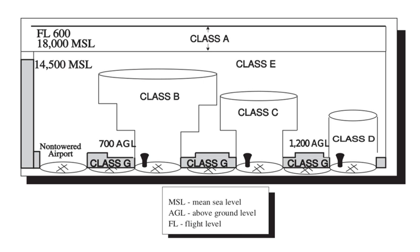Terminal Radar Service Area, or TRSA, is general controlled airspace wherein ATC provides radar vectoring, VFR vectoring, sequencing, and separation on a full-time basis for all IFR and participating VFR aircraft. Service provided at a TRSA is called 'stage 3 service.' TRSAs are depicted on VFR aeronautical charts and pilot participation is urged but not mandatory. They are designated in high-volume traffic areas where radar services are available but not otherwise designated as Class B or C airspace, such as the Palm Springs Valley in Southern California.